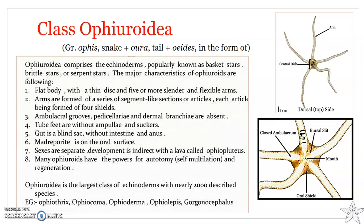Ophiuroids are often overlooked because of their small size, and they are often found occupying crevices in rocks and corals, and also clinging onto marine algae. The arms are long and, unlike those of asteroids, are sharply set off from the central disc, giving the central disc a very peculiar pentagonal shape, as you can see here. Brittle stars have branched arms and most have a central disc ranging in size from one to three centimeters.